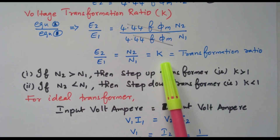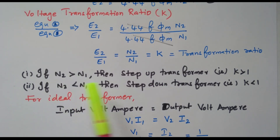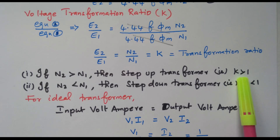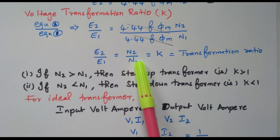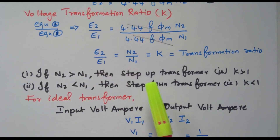Based on the K value we can classify transformers into step-up and step-down types. If N2 is greater than N1, meaning secondary winding turns are more than primary winding turns, it is called a step-up transformer, and K is greater than 1. Similarly, if N2 is less than N1, the secondary winding turns are less than the primary, it is called a step-down transformer, and K is less than 1.